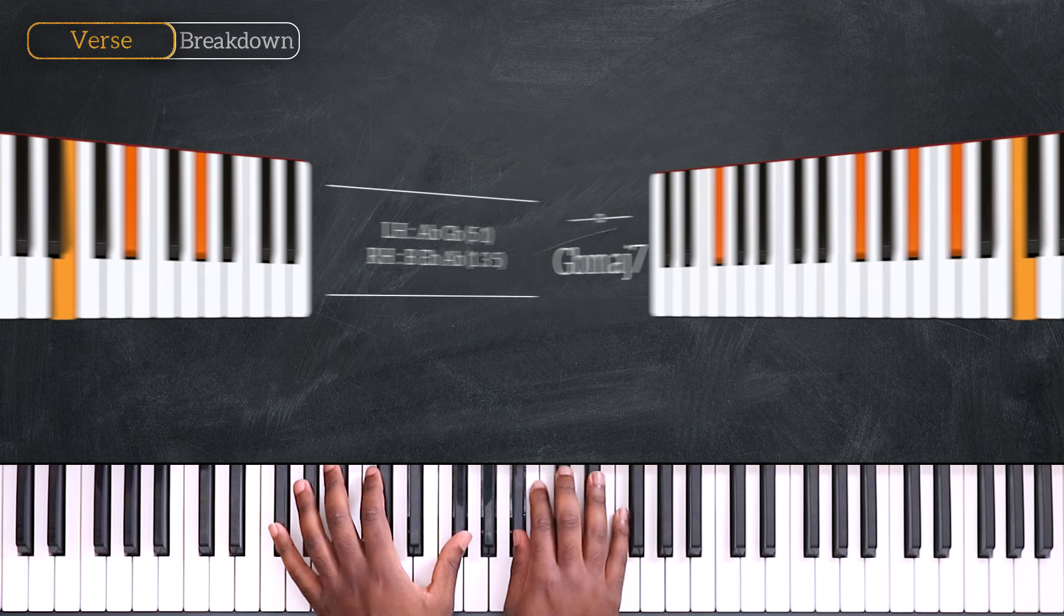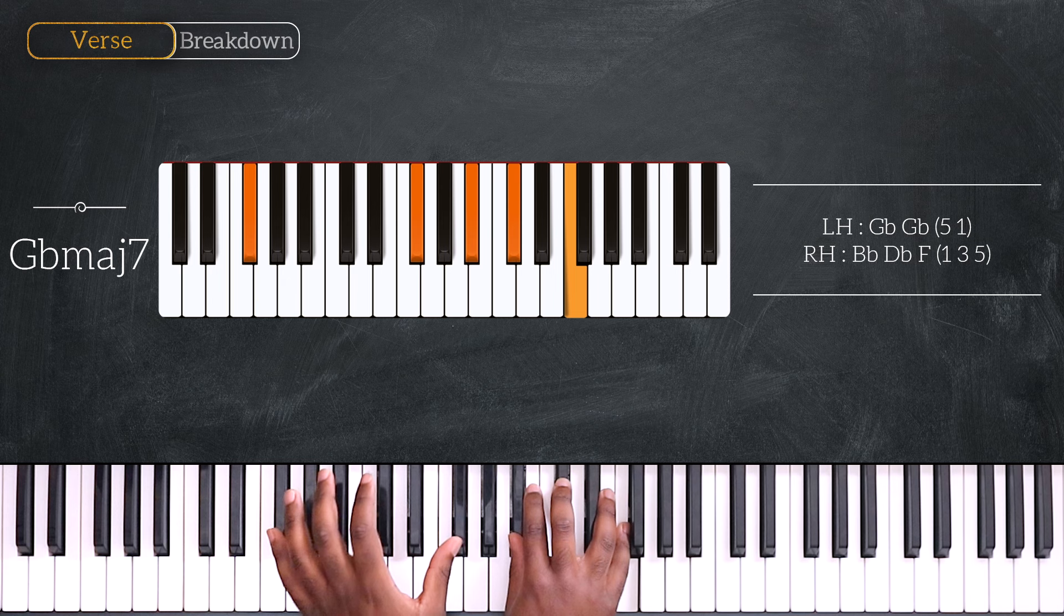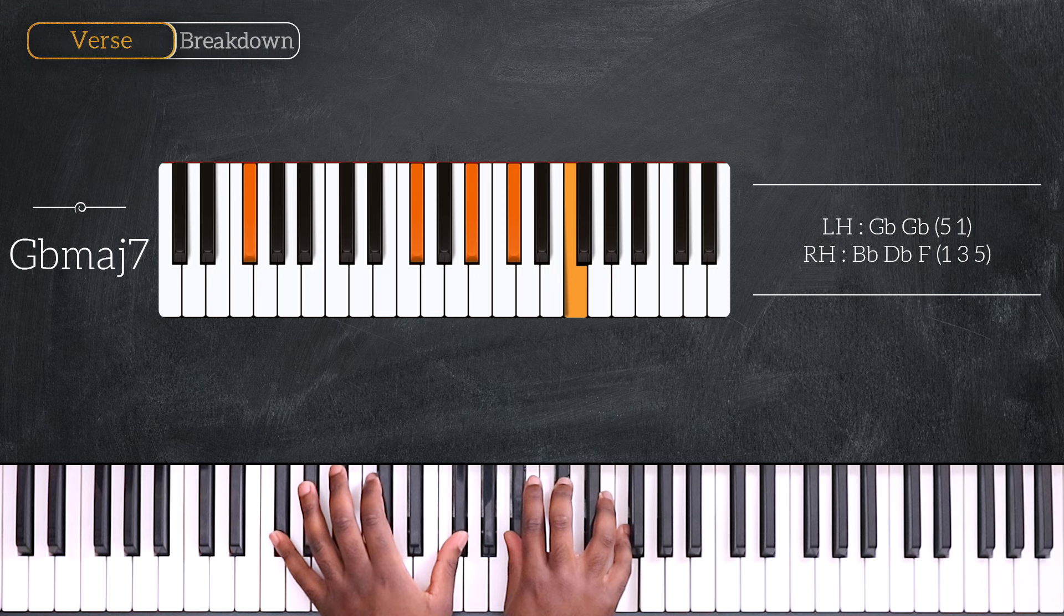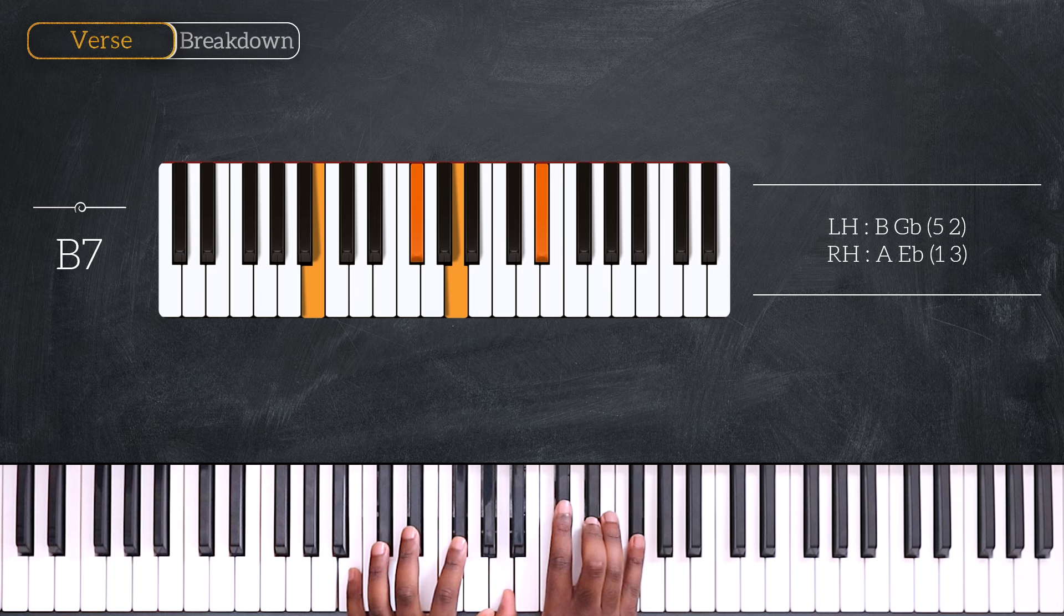Then Gb major 7, octave Gb, Bb, Db and F. After that we're going up a fourth, playing off key with B7. B and Gb, A, Eb and Gb.